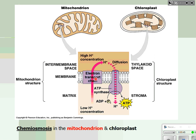In the mitochondria those high-energy electrons come from NADH and FADH2. In photosynthesis, the electrons come from chlorophyll: light energy absorbed by the chlorophyll excites electrons and they start moving down the electron transport chain. Once the protons are trapped in the compartment, the only way back across the membrane is through ATP synthase — that diffusion of protons through ATP synthase is what we call chemiosmosis.